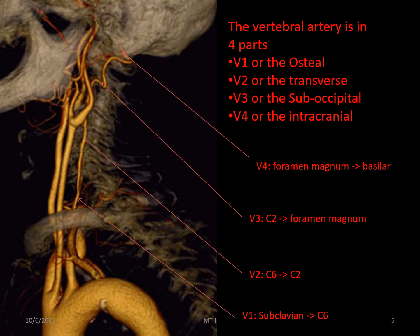The vertebral artery is described in four parts: the osteal or V1, which is its most distal part; the transverse or V2, where it runs up the neck in the transverse tunnel; the suboccipital part, V3, running between C2 and the atlas; and finally the intracranial portion, V4, from the foramen magnum to where it forms the basilar at the lower border of the pons.